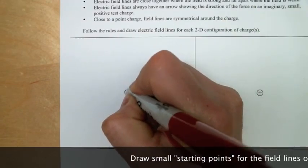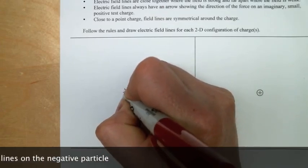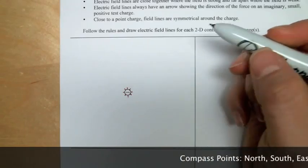For my negative charge, first I have to decide how many lines to draw. I'll draw eight. I like eight. Next, make them symmetrical. It's easy to do that using compass points.